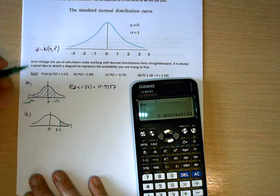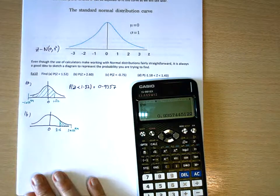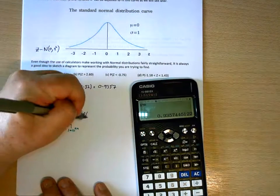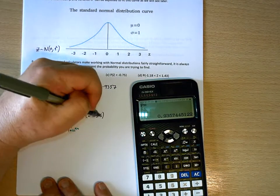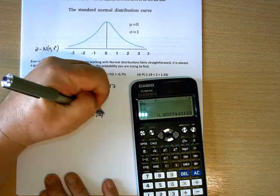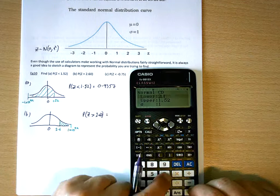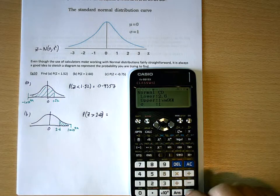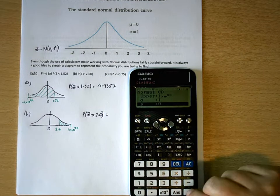So my upper limit has to go into something very large. And we put that in as 1 times 10 to the 99. So the probability that Z is greater than 2.60. So my lower limit, 2.6, my upper limit, 1 times 10 to the 99. Standard deviation of 1, mean of 0.